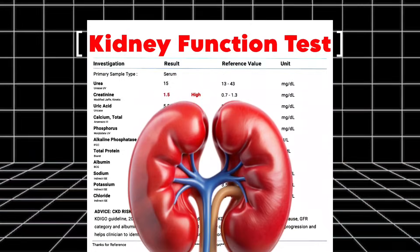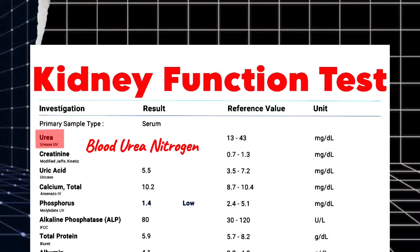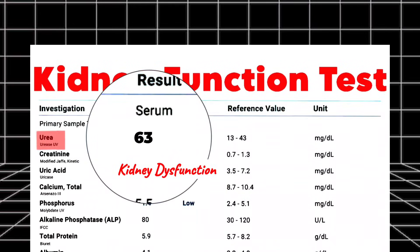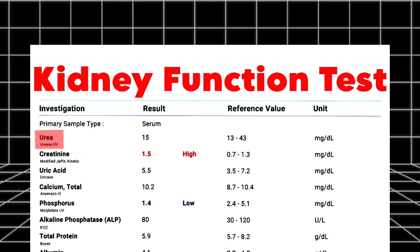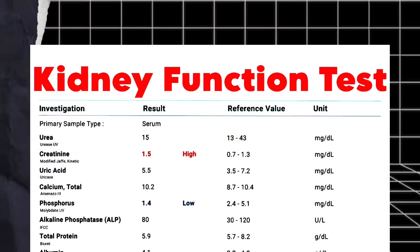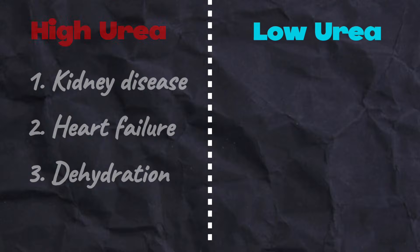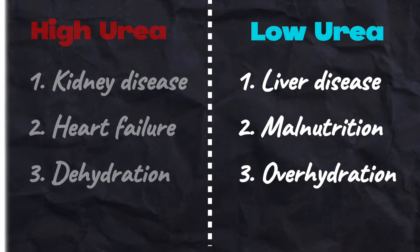A kidney function test, or KFT, is a set of blood and urine tests that assess how well your kidneys are working. Let's start with urea, also known as blood urea nitrogen. Urea nitrogen is a waste product produced when your body breaks down protein. High levels of urea can indicate kidney dysfunction, but may also be influenced by a high protein diet, dehydration, or certain medications. The normal range of urea in blood is between 13 to 43 milligrams per deciliter.